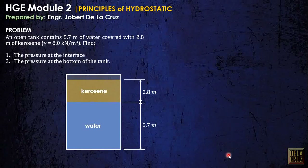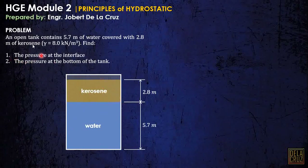It is not explicitly stated that the water is under the kerosene, but as we all know, water has a unit weight of 9.81, meaning water is heavier. So the water should be at the bottom. For part 1, calculate the pressure at the interface — meaning at that point, the pressure is just gamma times height.